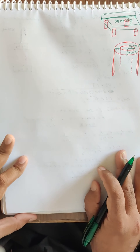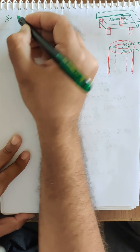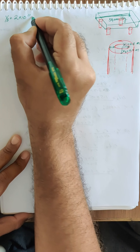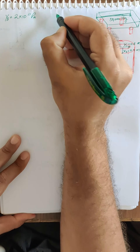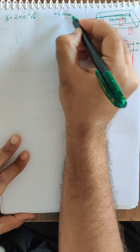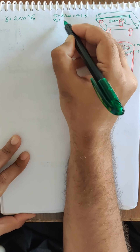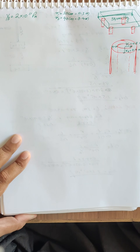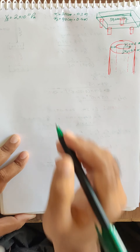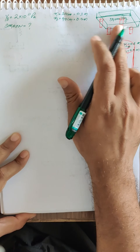Young's modulus of steel is given: Y = 2 × 10¹¹ Pascal. The radii are r1 = 0.3 m (30 cm) and r2 = 0.4 m (40 cm). We have to calculate the compressional strain of each column.